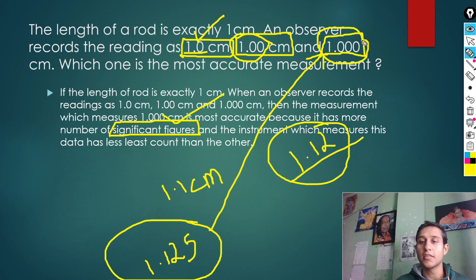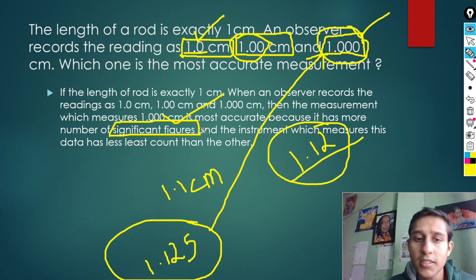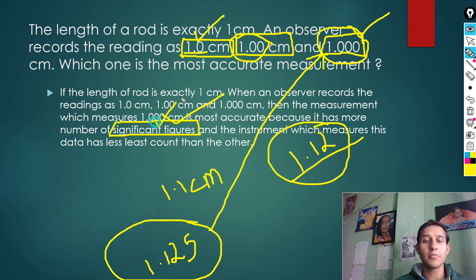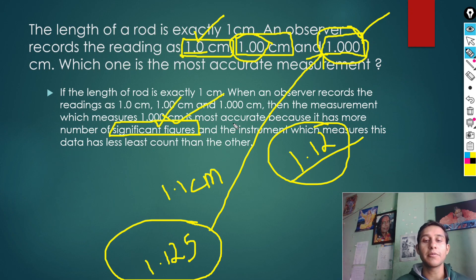So the answer is: the more significant figures a measurement has, the more accurate it is. The number of significant figures indicates the precision and accuracy of the measurement. That is our concept here.